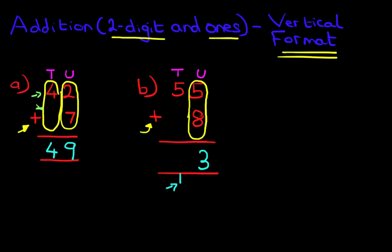So, we've added the units. We are now going to add the tens. For the tens, we've got 5 here, 0 over here, but we have 1 here. So, 5 plus 1 is 6. And that is our answer. 55 plus 8 is 63.